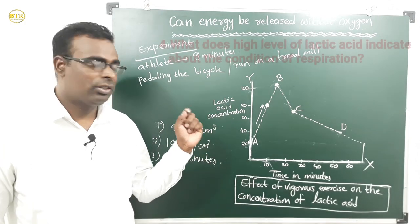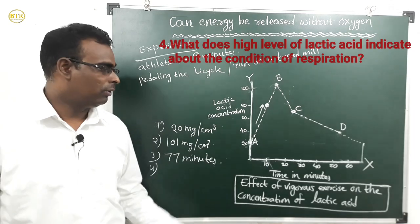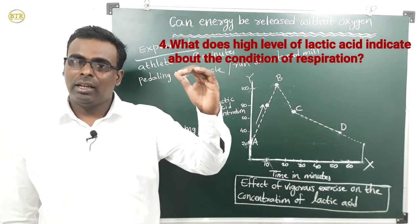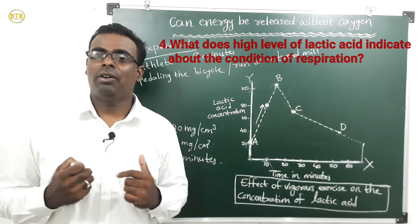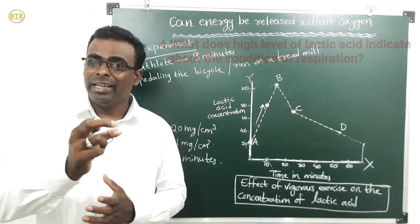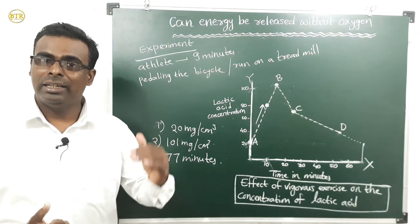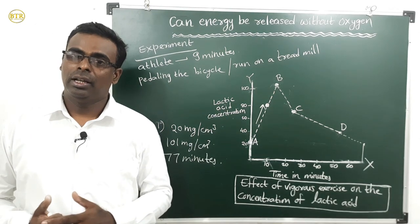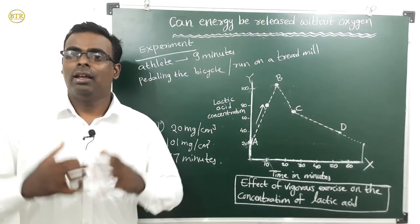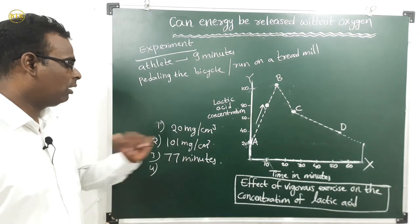The fourth question is: what does a high concentration of lactic acid indicate about the condition of respiration? Whenever a high concentration of lactic acid is produced, it means anaerobic respiration has occurred in the muscles. This indicates that lactic acid has accumulated, which causes muscular pain or muscle fatigue.